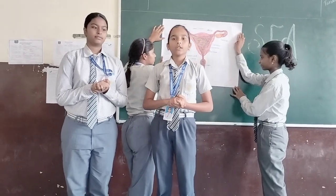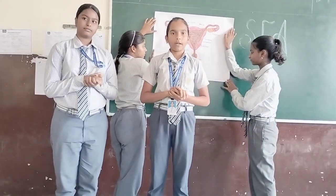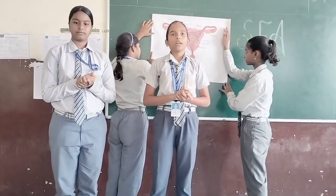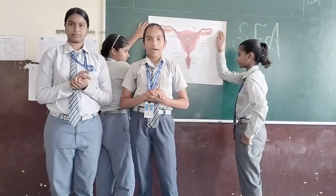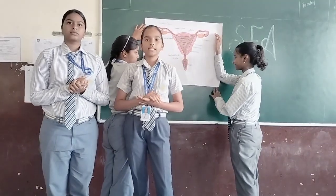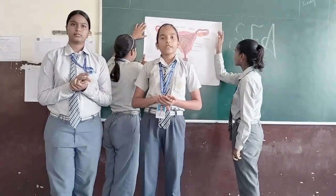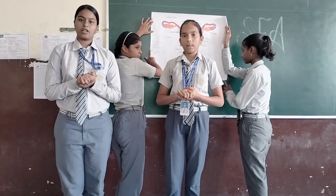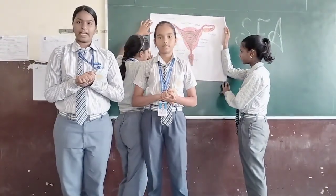Endometrium: the inner lining of the Uterus is known as Endometrium. Myometrium: the outer layer of the Uterus is known as Myometrium. Perimetrium: the outer serous layer of the Uterus is known as Perimetrium. Now our next topic is about the Ovarian ligament and Cervix.